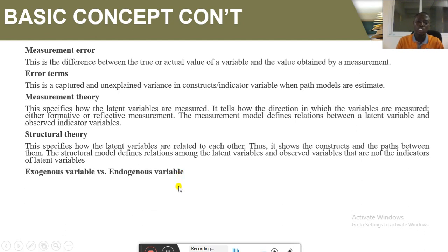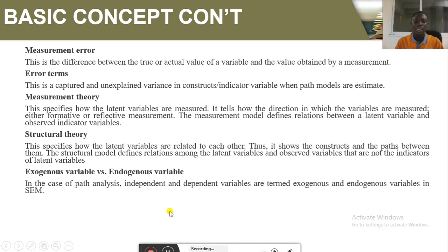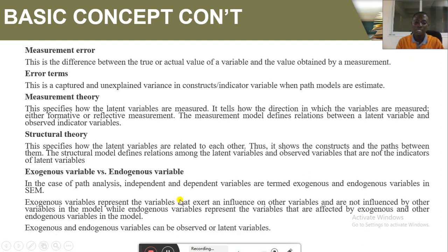The structural model defines relationships among the latent variables and the observed variables that are not indicators of the latent variable. Regarding exogenous versus endogenous variables: in path analysis, independent variables are termed exogenous and dependent variables are termed endogenous. Exogenous variables extend an influence on other variables and are not influenced by other variables in the model, while endogenous variables are affected by the exogenous and other endogenous variables in the model. Both can be observed/measured or latent, depending on the model.